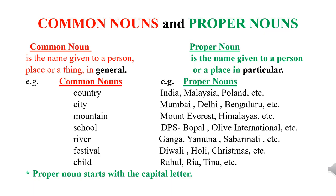Common Noun is the name given to a person, place or a thing in general. Whereas, Proper Noun is the name given to a person or a place in particular.